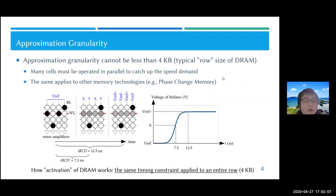An important characteristic is that the approximation granularity cannot be less than four kilobytes, which is a typical row size of DRAM. The reason is that many memory cells must be operated in parallel to catch up the speed demand, because the CPU is much faster than memory.